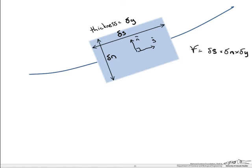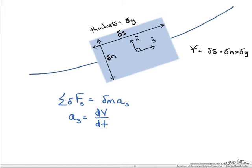Now if we go back and visit with Newton to get his second law, it states that the sum of all forces acting in the streamline direction on the element is going to equal its differential mass times the acceleration in the streamline direction. We assume that there are no viscous forces or surface tension acting on the particle. Acceleration is the change in velocity with respect to time, and using the chain rule we can rewrite this so that we can remove the dt term.